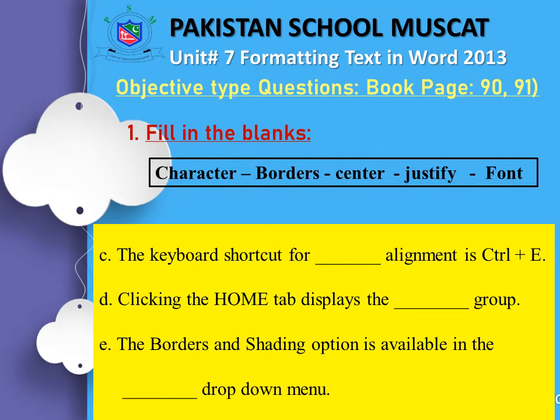Part C: the keyboard shortcut for blank alignment is Ctrl plus E — think about which alignment Ctrl+E applies: left, right, or center. Part D: clicking the Home tab displays the blank group — think about which group it shows. Part E: the Borders and Shading option is available in the blank drop-down menu — think about which menu it is available in.